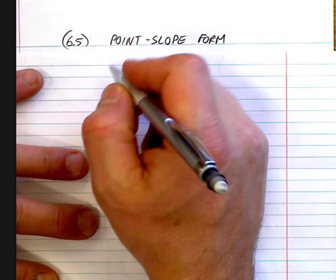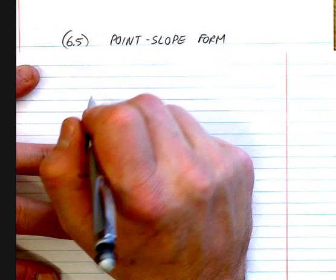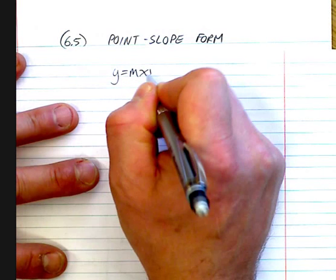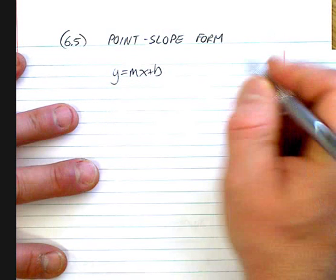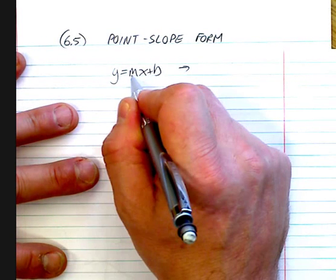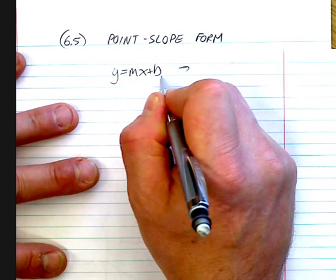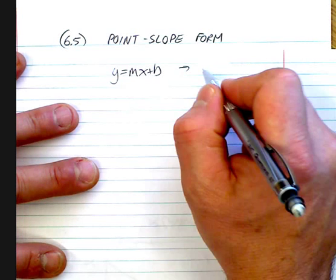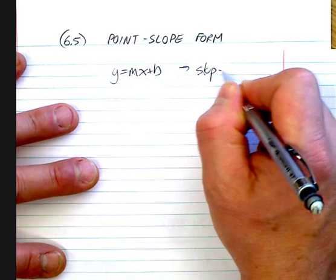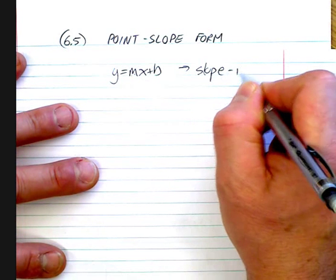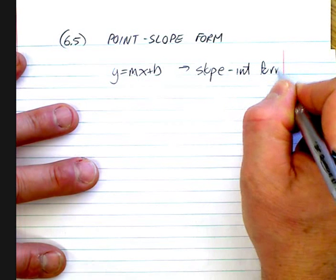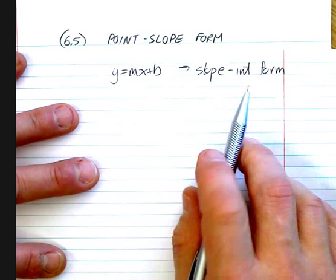So basically, where we're at now is we looked at this y equals mx plus b thing. That's what they call slope-intercept form — often called slope-y-intercept form — because you're given a slope and an intercept.